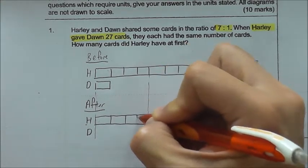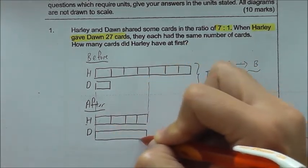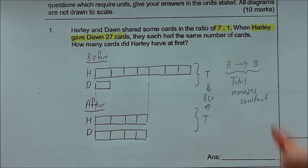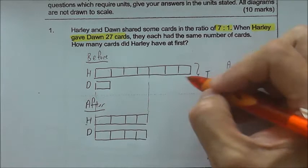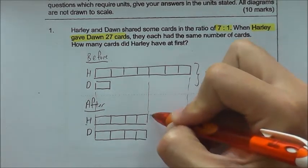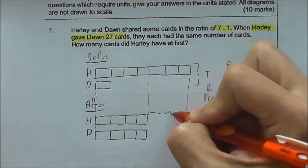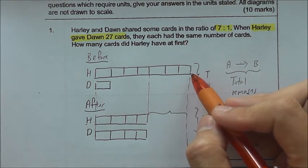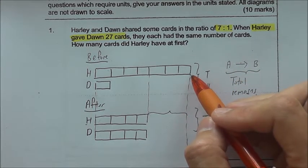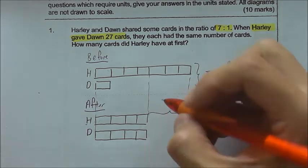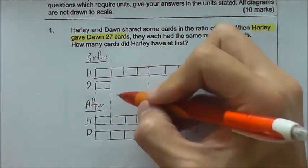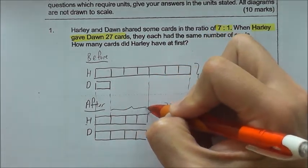1, 2, 3, 4... 1, 2, 3, 4. And Harley gave Dawn 27. So this is Harley. This is what Harley gave, such that the number of cards dropped from 7 units to 4 units. So this is 27. And you find that Dawn increased by 27 as well.